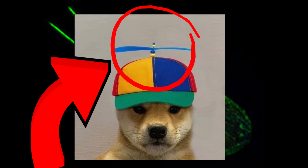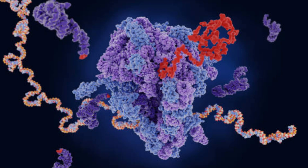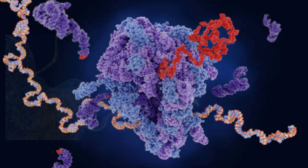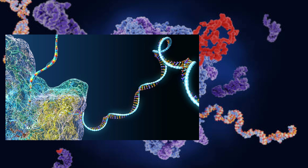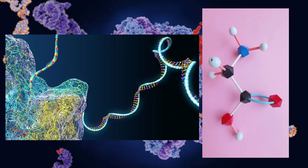Last but not least, the ribosomes. The ribosomes' job is to make protein. They read the messenger RNA sequence and translate that genetic code into a specified string of amino acids, which then grows into a long chain that folds and forms proteins.